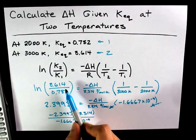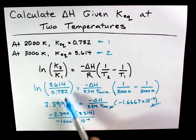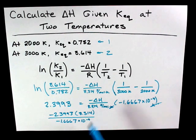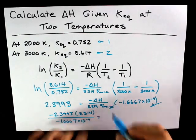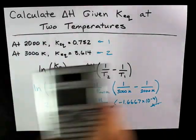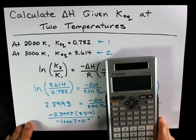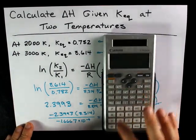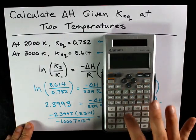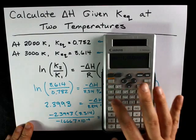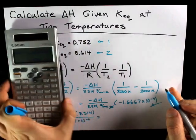The only thing that's left over is joules per mole on top. So, my answer is going to be in joules per mole. Here's that number again. I'm going to take the negative of that number. It's negative 2.3993 times 8.314 divided by negative 1.6666667 times 10 to the negative 4. And the answer I end up with is 119686.